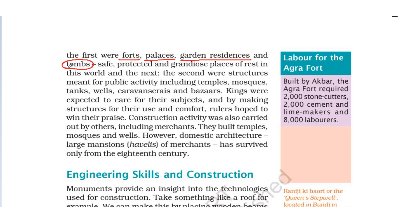The second type were structures meant for public activity, including temples (mandirs), mosques (masjids), tanks (ponds/talabs), wells (kuen), caravanserais — common resting places for travelers — and bazaars. Markets were also created by the kings. Kings were expected to care for their subjects, so they built these public structures.